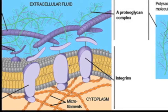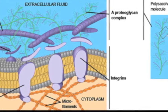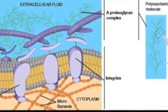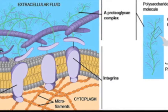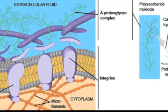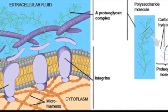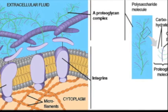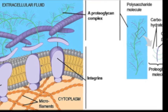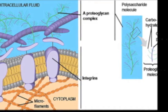The extracellular matrix, also known as ECM, is only found in animal cells. There are three classes of molecules found: structural proteins known as collagens and elastins; protein polysaccharide complexes to embed the structural proteins, known as proteoglycans; and adhesive glycoproteins to attach cells to the matrix, known as fibronectins and laminins.